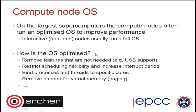What does that mean? If you ask for more memory than the computer has, your program will crash with a segmentation fault. On Archer, most nodes have 64 gigabytes of RAM. If you run 24 processes that each want 3 gigabytes, that's 72 gigabytes — beyond the 64GB limit. The programs will start, fail to allocate memory, and crash. Archer will report an OOM — out of memory — error.